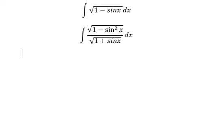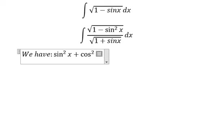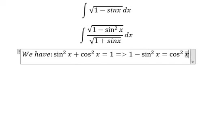We have the formula sine x squared plus cosine x squared equals to number 1. So we have 1 minus sine x squared equals to cosine x squared.